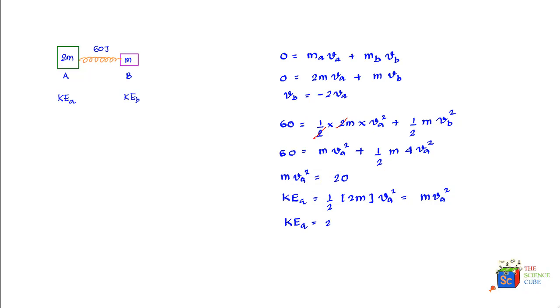The kinetic energy of mass B would therefore be equal to 60 joules minus 20 joules, which is equal to 40 joules.